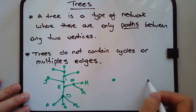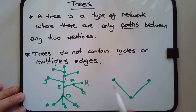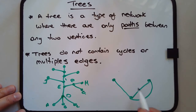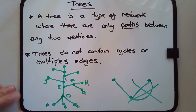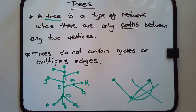You can't have a situation like this — a multiple edge is not allowed, meaning it's not a tree. It's something else, but it's most certainly not a tree. Yes, it's a connected network, but it's not a tree. The emphasis is on that particular type of representation.